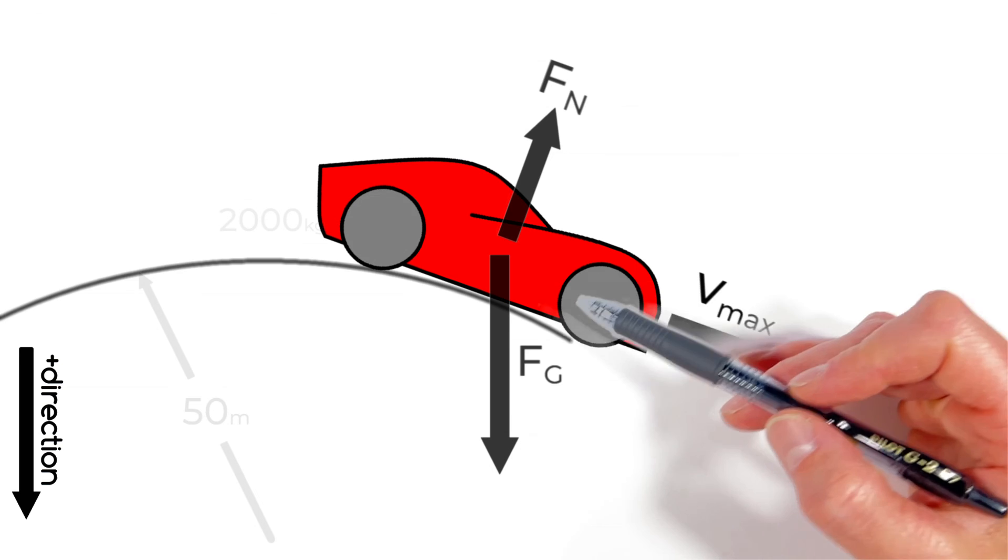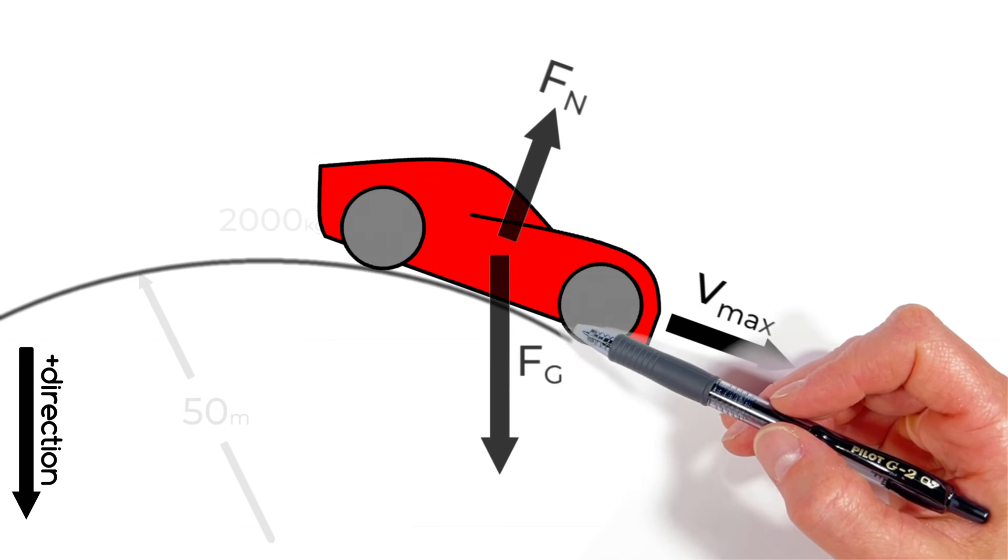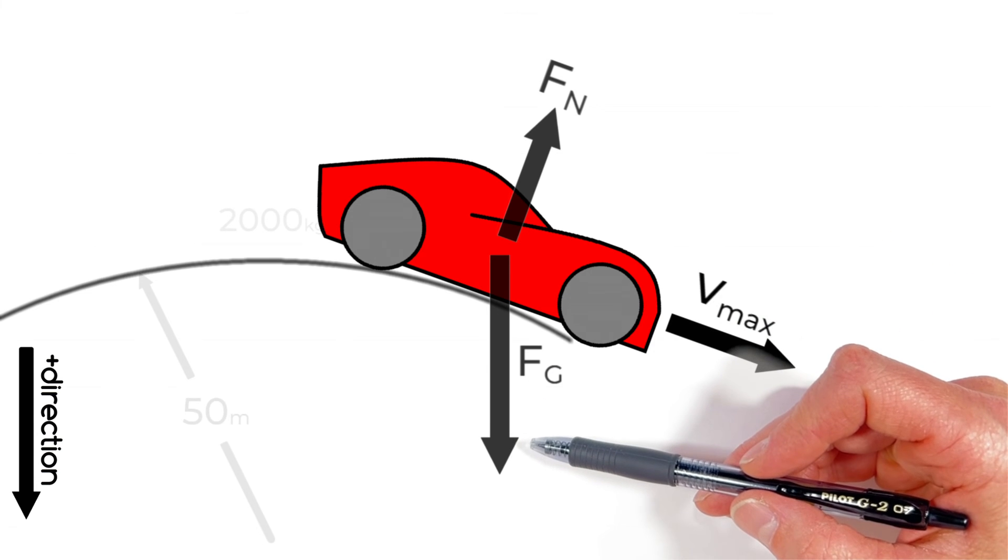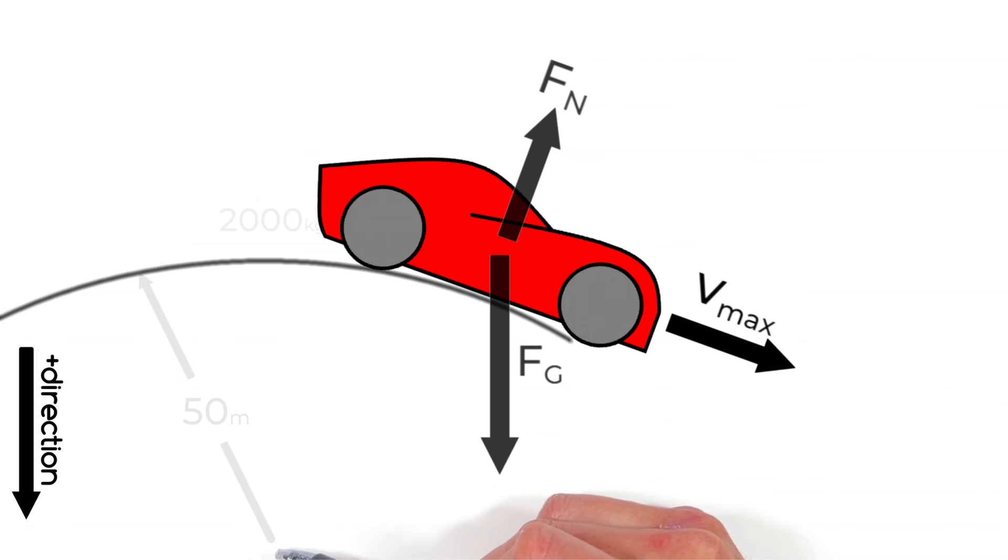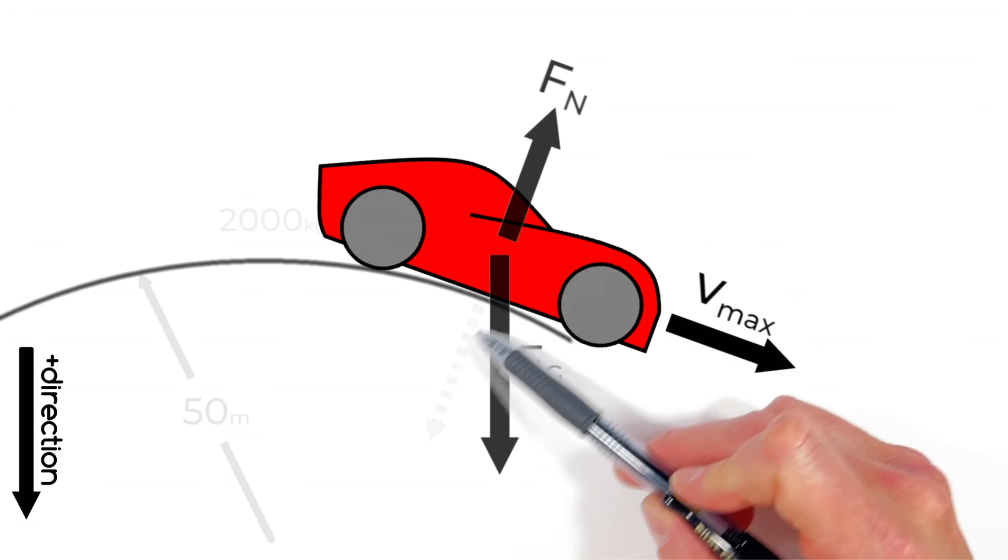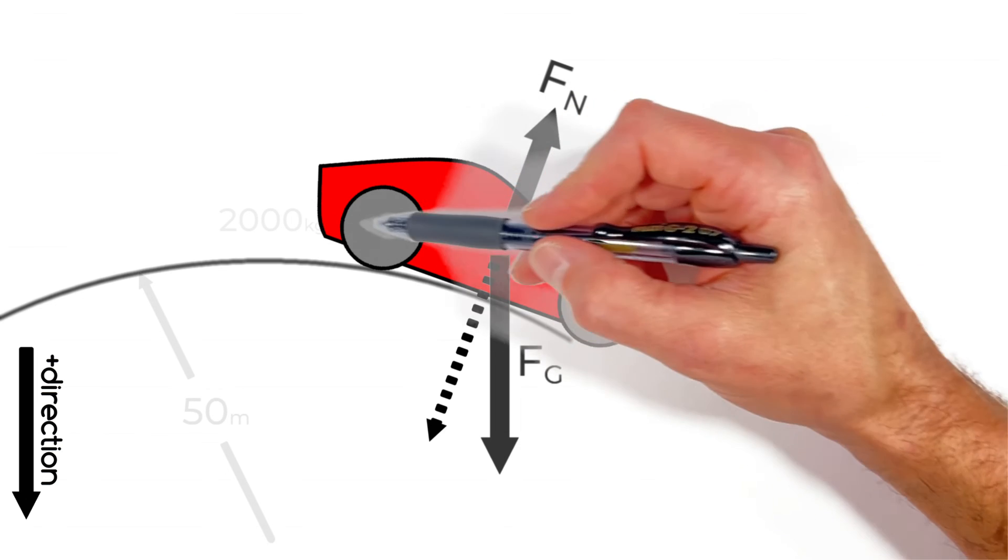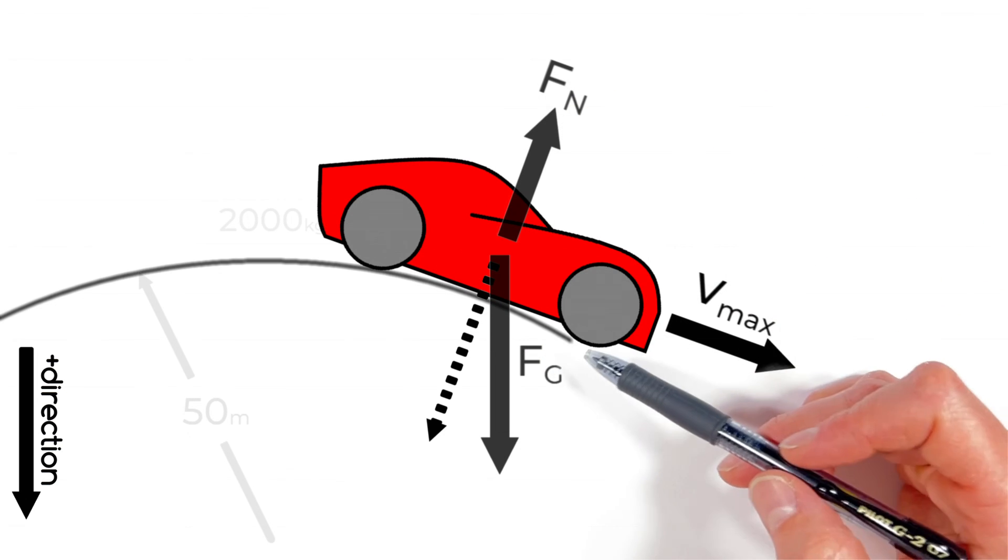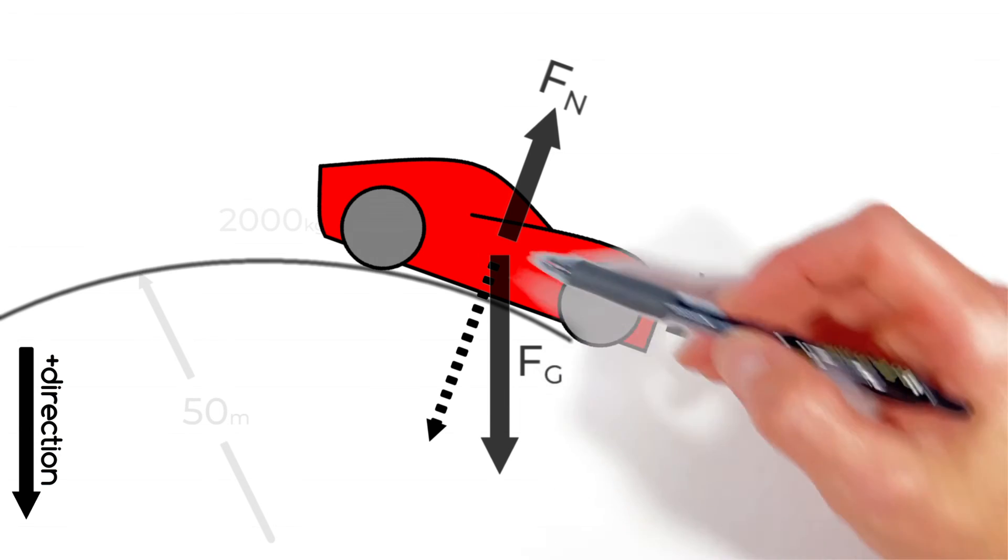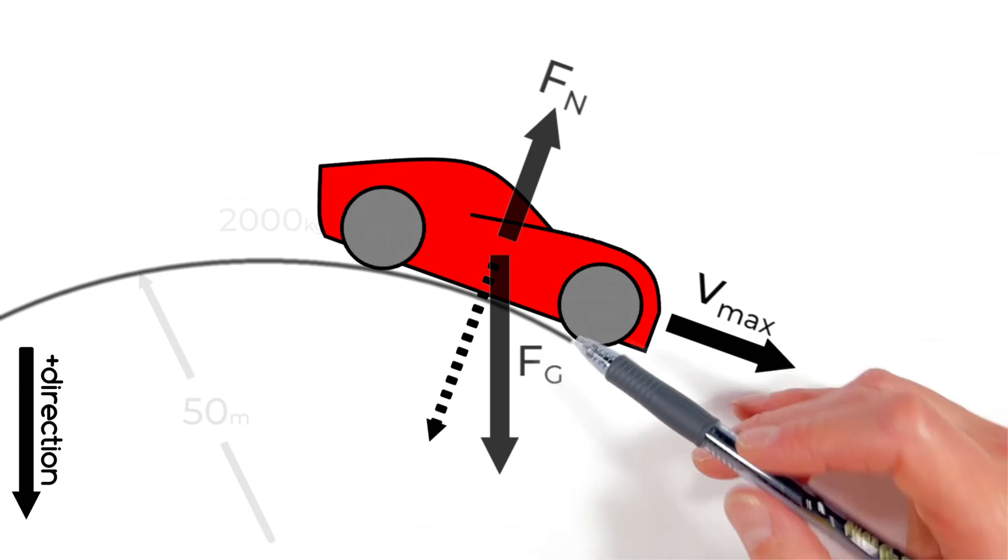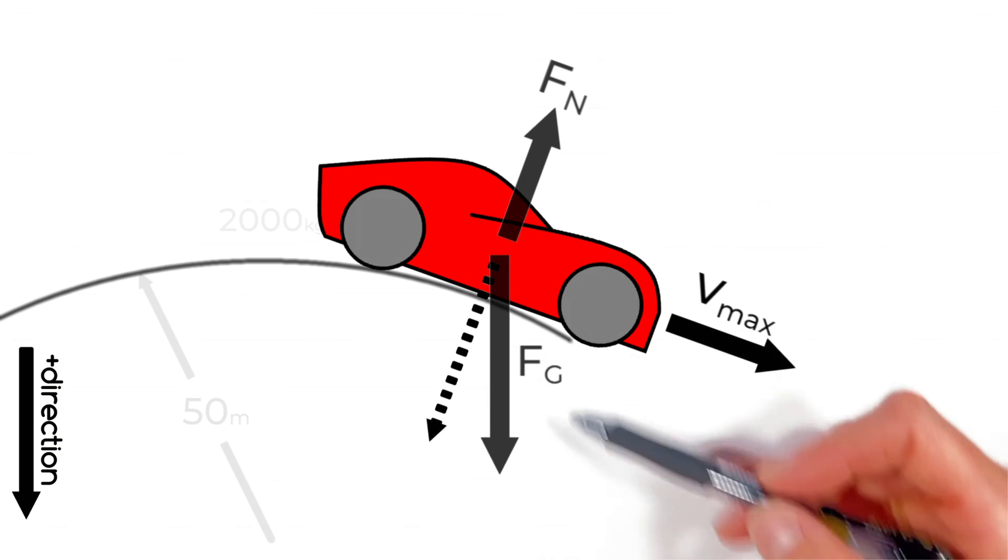Now the only force that can act centripetally on this car or toward the center of the circle over here is going to be gravity but gravity is always going to be straight down. So as the car rolls off the edge of this hill here gravity is still acting straight down and so rather than having gravity act entirely in the centripetal direction only a component of gravity acts centripetally. Meaning as the car rolls off the edge of the hill the centripetal force acting on the car is going to get smaller and smaller.